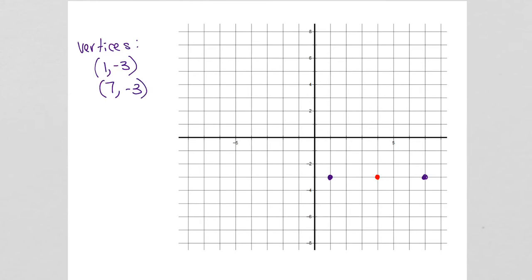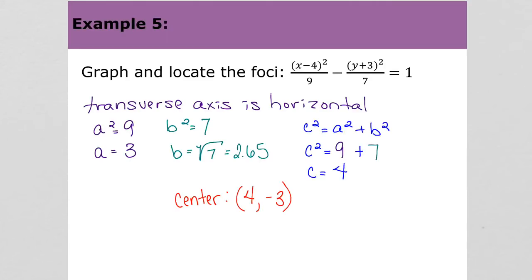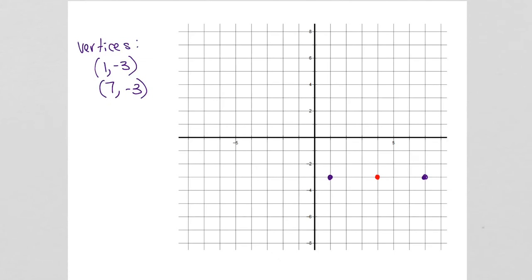Then b was 2.65, so I'll put dots 2.65 above and below the center to help make the box. Since c is 4, we go 4 to the right and 4 to the left of the center. That means our foci are at (0, -3) and (8, -3).